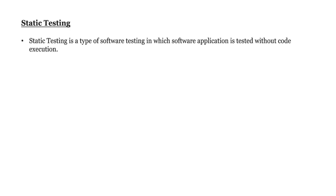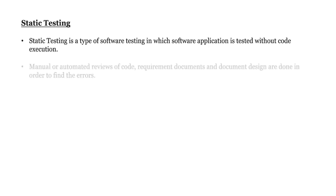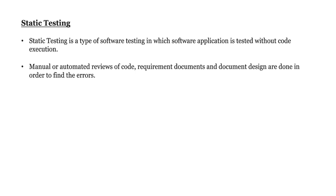Let's talk about Static Testing first. Static Testing is a type of software testing in which a software application is tested without code execution. Basically, we will not execute any code here, which means that it is a type of verification. Manual or automated reviews of code, requirement documents, and design documents are done in order to find the errors. Here, any kind of reviews can happen.